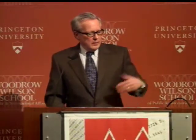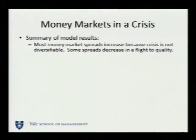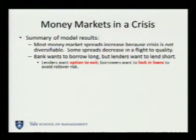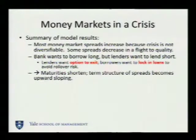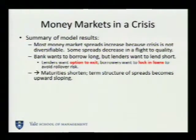The paper presents a model. Imagine we're just entering the crisis — most money market spreads are going to increase, but not all of them. General collateral repo is going to go down, and so are some others. The first thing we should see is an increase in price spreads. Then there's the important issue that borrowers want to lend long because they want to lock in funding, but lenders don't want to lend long — they only want to lend short because they want the option to exit. One implication is that maturity is shortened, and more specifically, the term structure of spreads is going to be upward sloping. Normally this term structure of spreads is flat, and then it's going to become steeper and steeper.